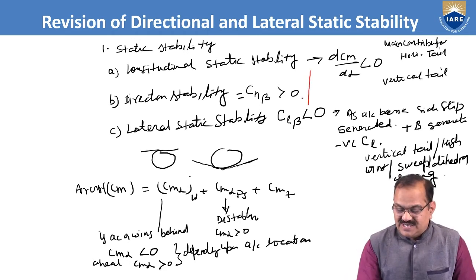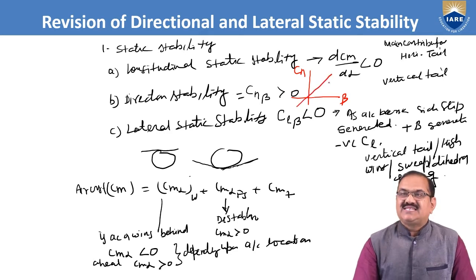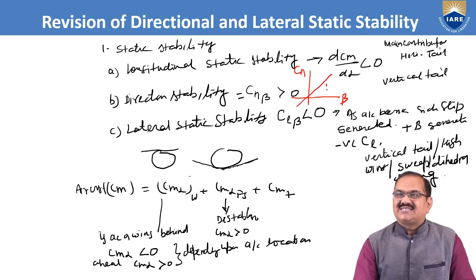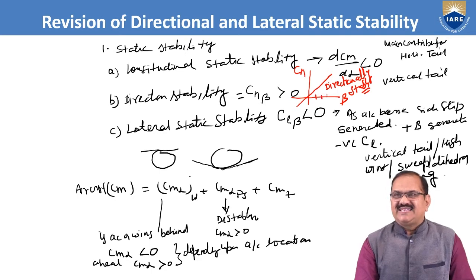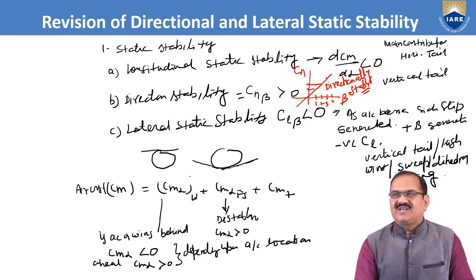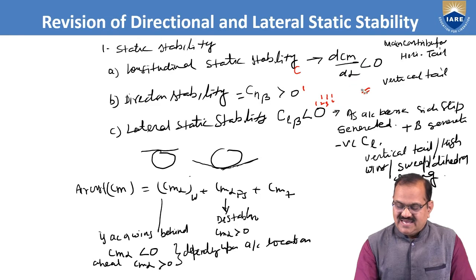If we plot Cn versus beta, and the slope is positive — as beta increases from 1, 2, 3, 4, Cn also increases — then we can say the aircraft is directionally stable.